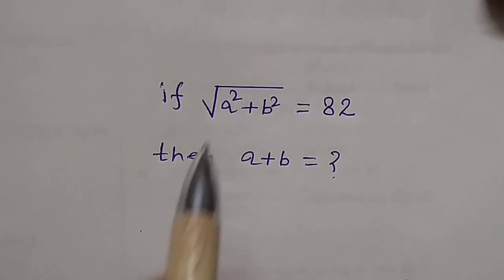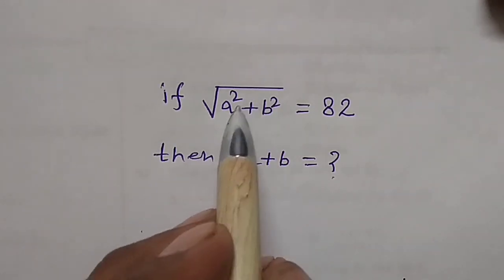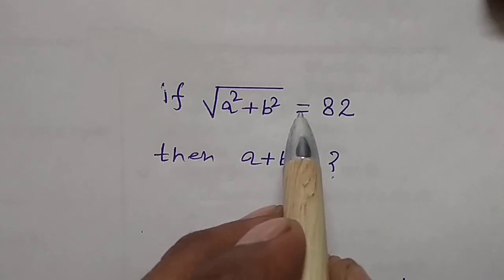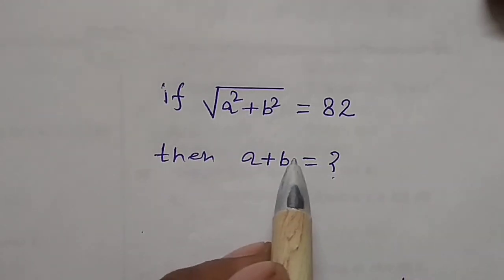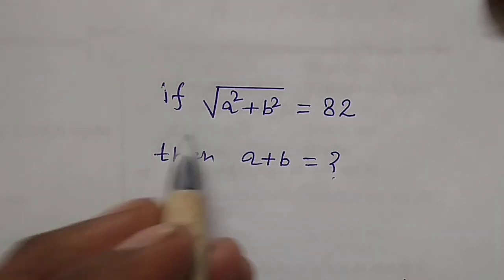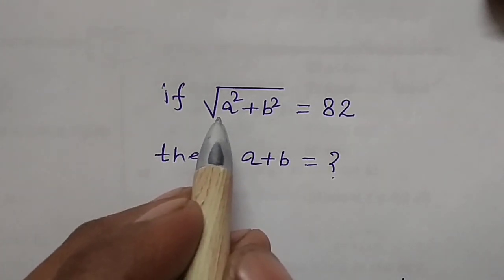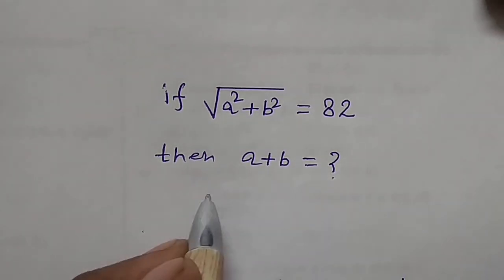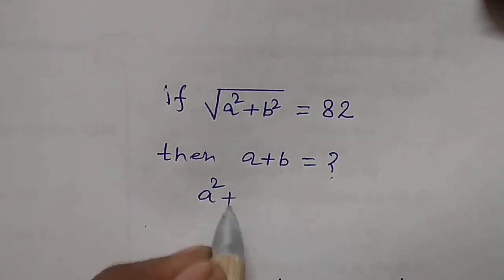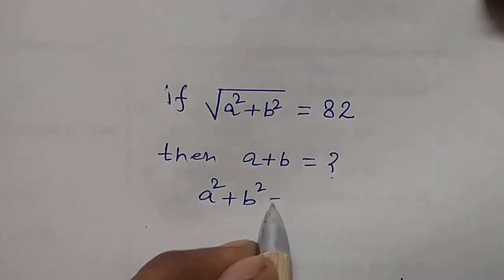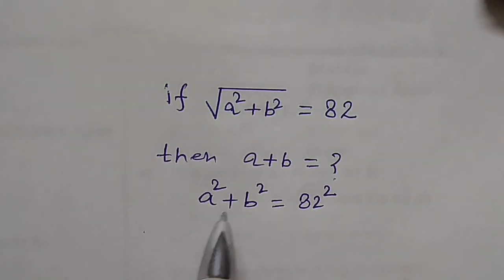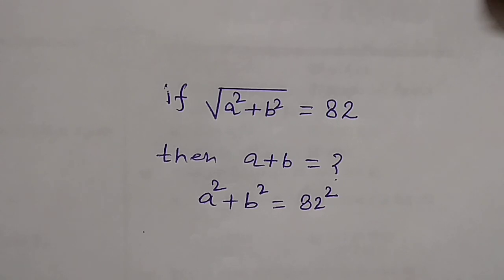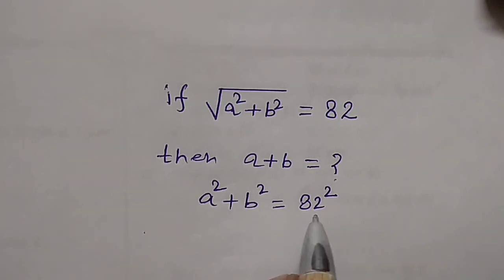Hello friends, the question is: if the square root of (a² + b²) is equal to 82, then find the value of a plus b. We solve this problem by squaring both sides, so we can write a² + b² = 82². This is the Pythagorean theorem, where the hypotenuse is 82.